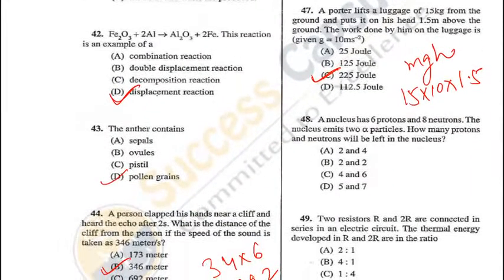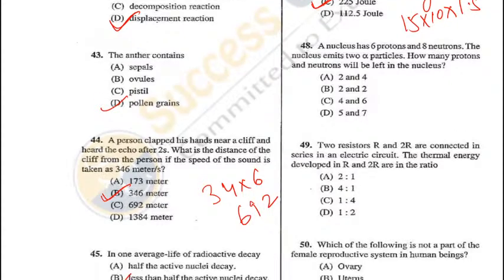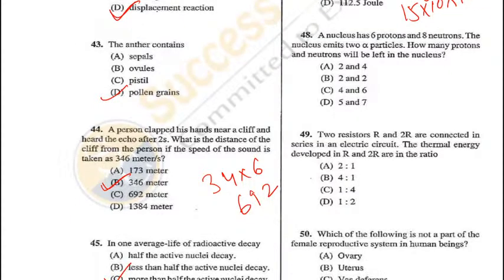Question 48: A nucleus has 6 protons and 8 neutrons (mass number 14, atomic number 6). It emits 2 alpha particles. Each alpha particle reduces mass number by 4 and atomic number by 2. So after 2 alpha emissions: protons = 6 − 4 = 2 and neutrons = 6 − 4 = 2... giving 2 protons and 4 neutrons — A is the answer.